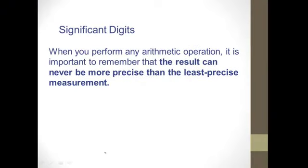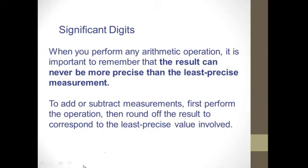Keep in mind that significant digits are used to express the precision of your instrument. You cannot be more precise than your least precise measurement. To add or subtract measurements, first perform the operation and then round off the result to correspond to the least precise value. The idea is that you don't want to round off until the end.